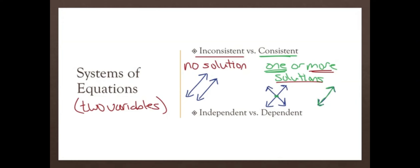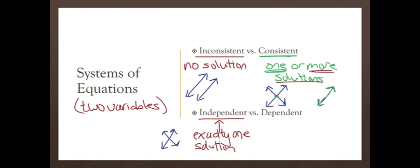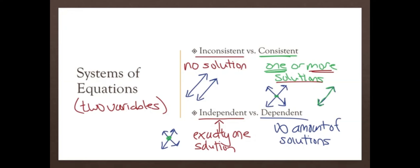Independent means it has exactly one solution — exactly that picture of intersection we described in the consistent case, where two lines cross at exactly one point. If it's inconsistent, it can't be either independent or dependent. If it's consistent with exactly one solution, it's independent. If it has more solutions, the lines are dependent upon each other, giving an infinite amount of solutions — that's the picture where one line lies exactly on top of the other.